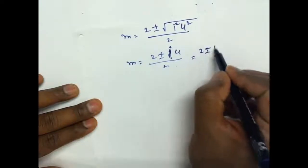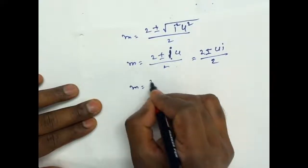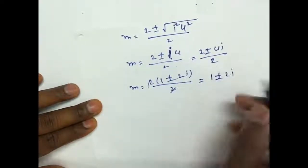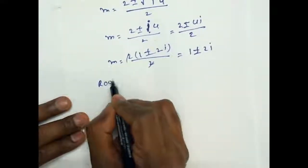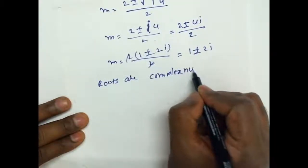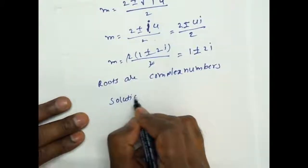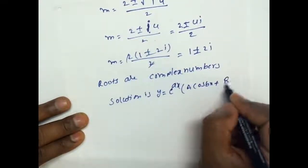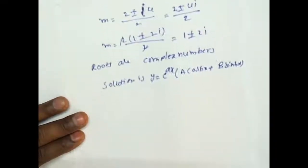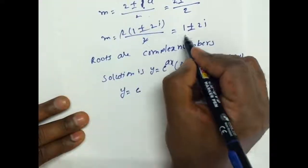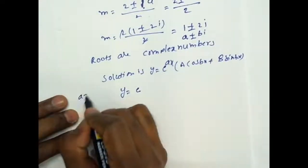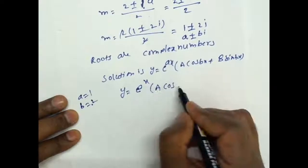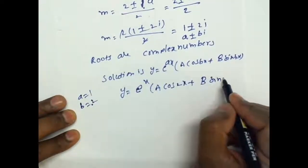So m equals 1 plus or minus 2i. The roots are complex numbers. The general solution is y equals e to the power ax into A cos(bx) plus B sin(bx), where a equals 1 and b equals 2. Therefore y equals e to the power x into A cos(2x) plus B sin(2x). Thank you for watching my video.